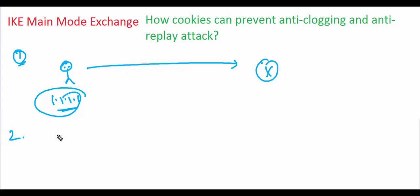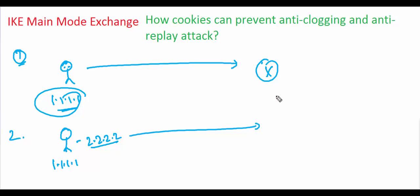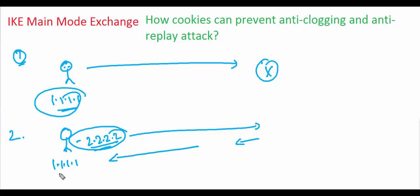In the second attack, the attacker uses a spoofed IP address. His real IP is 1.1.1.1 but he changes his source IP to look like 2.2.2.2 and requests VPN negotiation to get the responder cookie. The problem is the responder replies to the spoofed address 2.2.2.2, so the packet won't reach the attacker unless he owns that IP or can force-route traffic through himself.